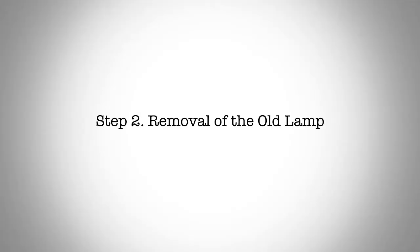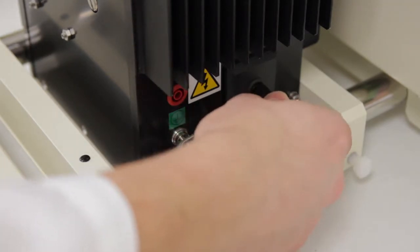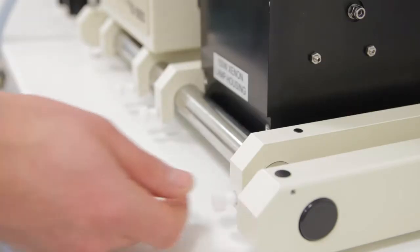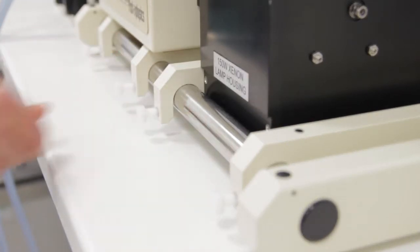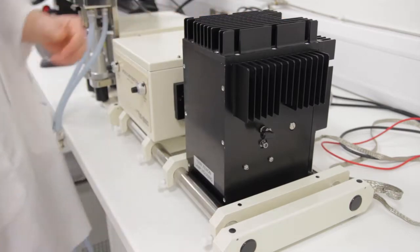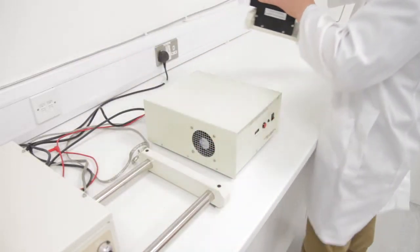Step two, removal of the old lamp. Disconnect the red and black power cables from the rear of the lamp housing together with the braided earth strap. Loosen the four white plastic bolts which secure the lamp housing to the optical rail. Slide the lamp housing to the right, then remove it from the optical rail and place on a suitable work surface.